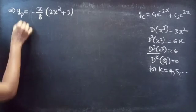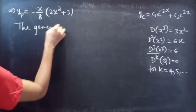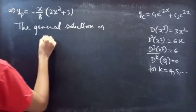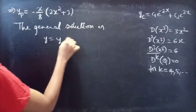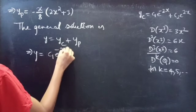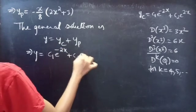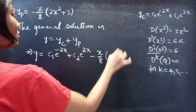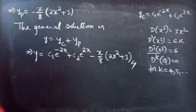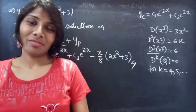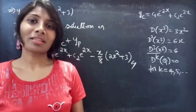Now let's write the general solution. The general solution is given by y equals yc plus yp. Therefore, y equals c1 e to the power minus 2x plus c2 e to the power 2x minus x by 8 into (2x squared plus 3), which completes the problem. We have seen a problem from higher order linear differential equations in this video. Hope you understood. We will see you in the next video. Bye bye.